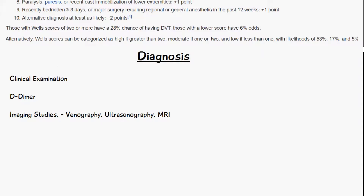Deep vein thrombosis can be diagnosed through clinical examination — checking the leg for symptoms, discoloration, pitting edema, swelling, and movement of surrounding joints, as well as testing Homans' sign or Moses' sign. However, clinical examination alone is not sufficient. Blood work can also be done, specifically checking D-dimer, which is a breakdown product of fibrin. People with thromboembolic diseases have high levels of D-dimer, detectable via blood agglutination or the ELISA test (enzyme-linked immunosorbent assay).